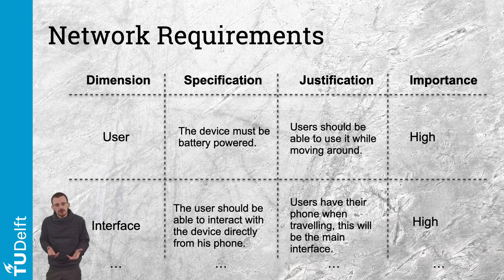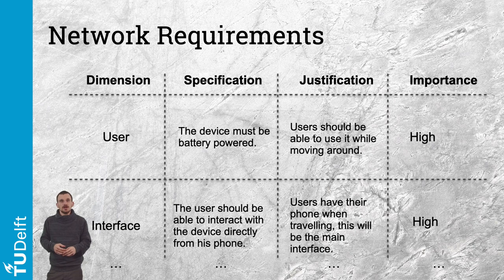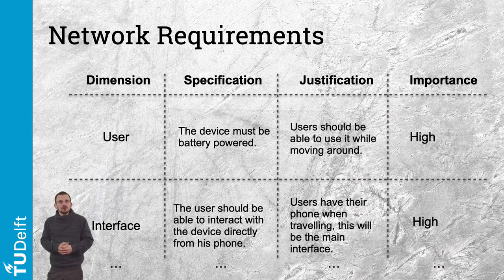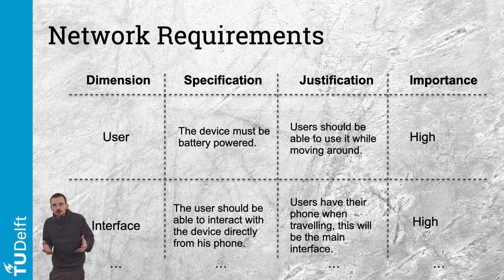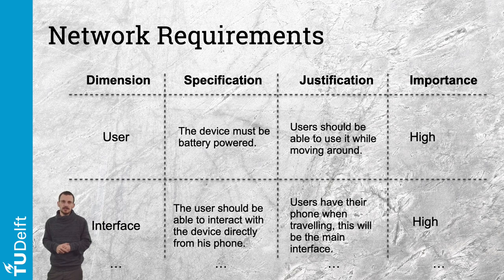This video explores the requirements that emerge from all these connected physical things. Similarly to other aspects of the digital product, we aim to specify the criteria that will influence our choice of network technologies. We have a dedicated dimension for network-related elements on the digital product canvas, and although this is the corner we aim to specify further, requirements emerge from all other canvas dimensions and layers.